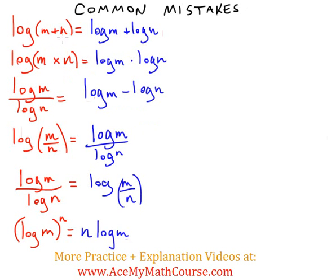Log of m plus n is not equal to log m plus log n. So if you had something like log of 5 plus 2, the only thing you can really do here is say that's log 7 and then perhaps evaluate this if you need to. But that's by no means equal to log 5 plus log 2.